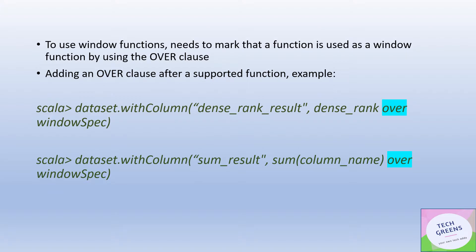To make any operation work as a window function — for example, applying an aggregate function on a window — we use the OVER clause. As shown in the example in green: suppose I want to apply dense rank on a particular window specified as window_spec. To implement dense rank as a window function, we use the OVER clause. Similarly, instead of dense rank, if you want to use sum, you write sum(column_name) OVER window_spec — that's how you transform a simple aggregate function into an aggregate window function.